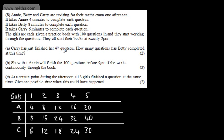So let's look at the question. It says Carrie has just finished her fourth question. How many questions has Betty completed at this time? We can see here that it's now 16 minutes. We can go across and simply say now that it's going to be two questions.